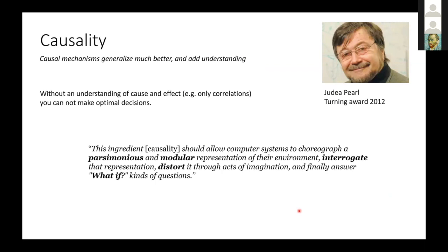Judea Pearl has said something like: this ingredient should allow computer systems to choreograph a parsimonious and modular representation of their environment, interrogate that representation through active imagination, and finally answer what-if kinds of questions. We can imagine an image of a blue elephant cycling on the moon — something we would never see, only imagine. It's built out of modules like an elephant, a bicycle, and the moon. We can manipulate that in our minds, play the video, and ask what if it hits a stone. That's the power of a generative model, because we use the laws of physics and causality to play out these movies.